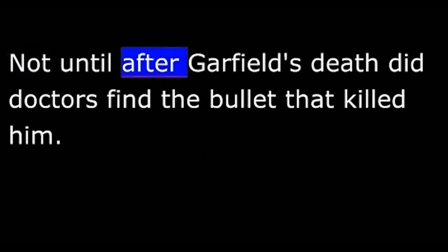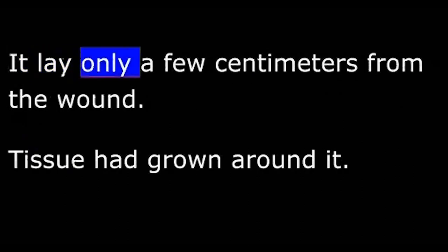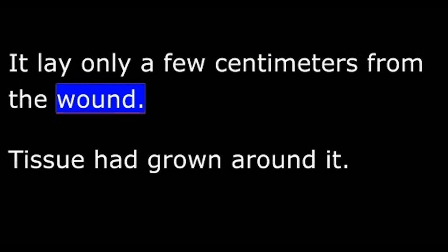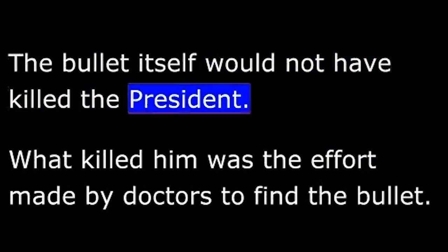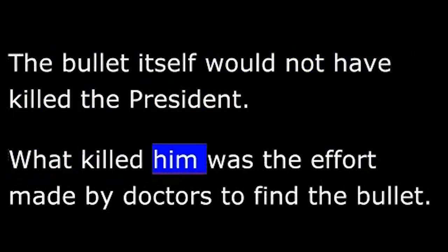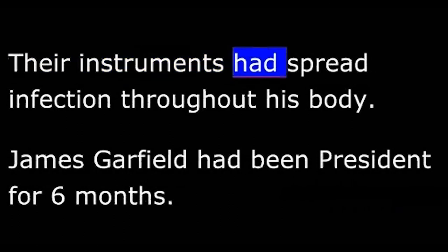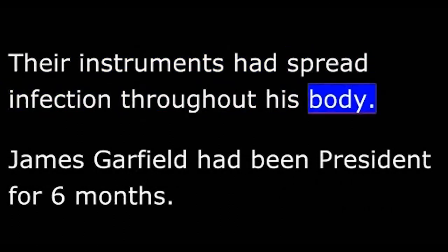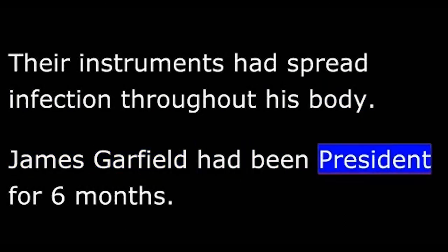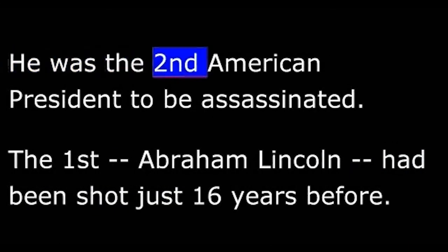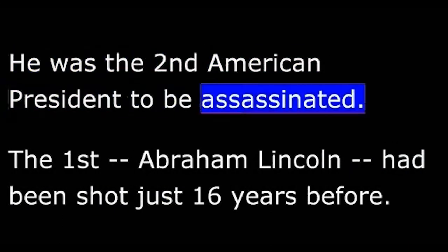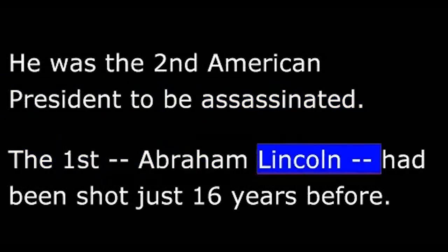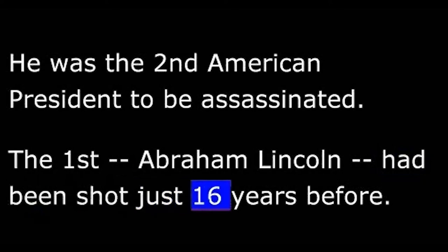Not until after Garfield's death did doctors find the bullet that killed him. It lay only a few centimeters from the wound. Tissue had grown around it. The bullet itself would not have killed the President — what killed him was the effort made by doctors to find the bullet. Their instruments had spread infection throughout his body. James Garfield had been President for just six months. He was the second American President to be assassinated. The first, Abraham Lincoln, had been shot just sixteen years before.